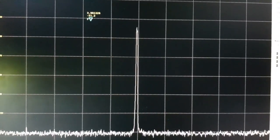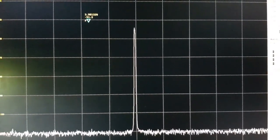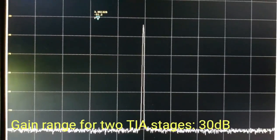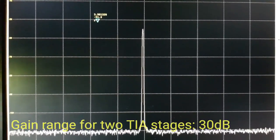So we've got two TIA amplifiers here, crystal filter in the middle, and we're seeing 30 dB of AGC range.